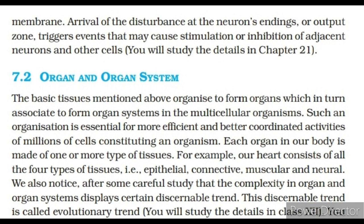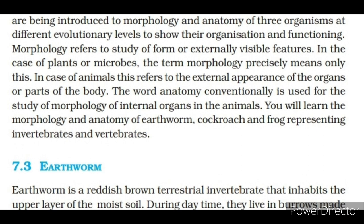Organ and organ system: The basic tissues organize to form organs, which in turn associate to form organ systems in multicellular organisms. Such an organization is essential for more efficient and better coordinated activities of the millions of cells constituting an organism. Each organ in our body is made of one or more types of tissues. For example, our heart consists of all four types of tissues: epithelial, connective, muscular and neural. The complexity in organ and organ systems displays a discernible trend called evolutionary trend.